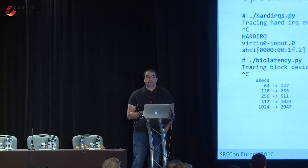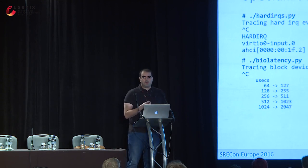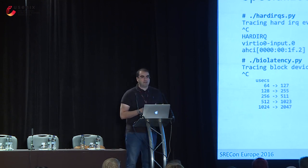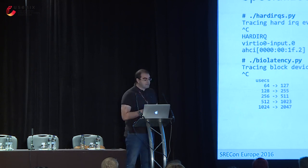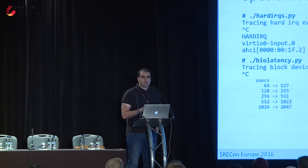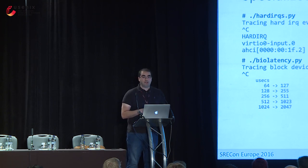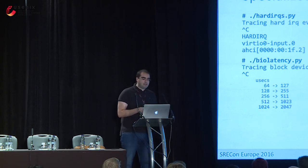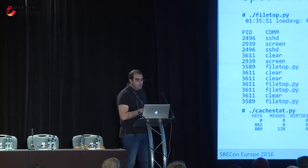One simple example is hardirqs — a tool that displays hardware interrupt processing time and gives you a summary of each hardware interrupt and the total time in microseconds the system spent processing them. Another example is biolatency, which gives you a nice ASCII histogram of durations of block I/O operations. In this example, we had a lot completing quickly but one outlier taking between one and two milliseconds. You can get these tools to report at predefined intervals or run until you hit Ctrl+C.